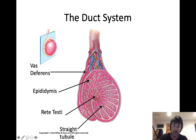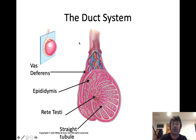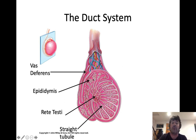Once sperm are produced, they move from the seminiferous tubule to the straight tubule to the rete testis. More importantly, sperm eventually moves into a worm-like structure that drapes over the posterior aspect of the testes — you can feel it if you feel the testes, and it's an important part of a testicular examination. This structure is called the epididymis. The job of the epididymis is to store and mature sperm. Sperm don't become reproductively viable until they spend time in the epididymis.